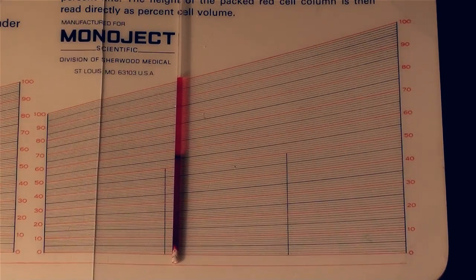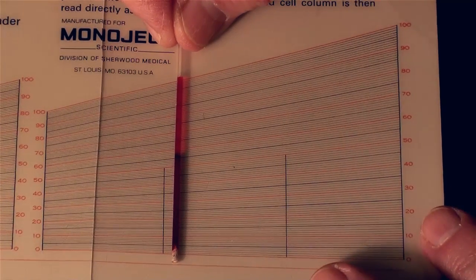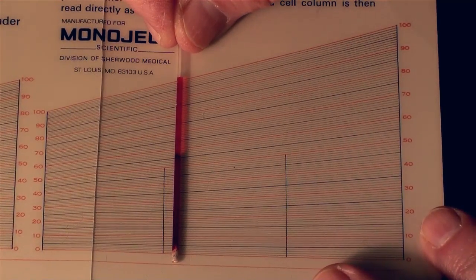Let's take a look at the hematocrit results. The hematocrit tube has been centrifuged. We're now analyzing it with this card.